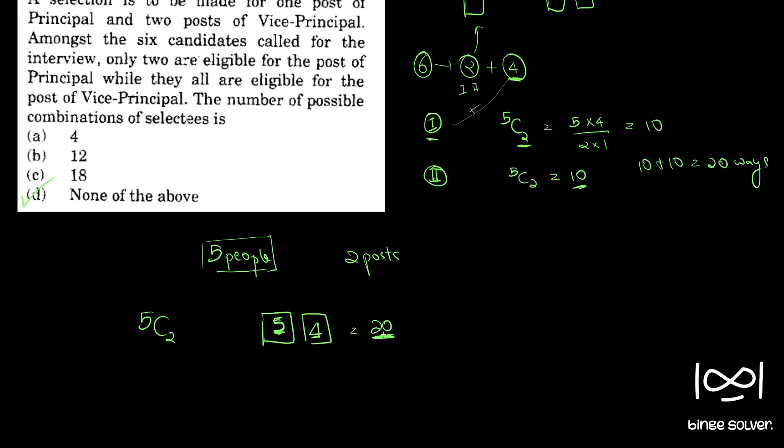But in this 20 combinations what happens is that there are some repetitions. We will name these 5 people 1, 2, 3, 4 and 5.